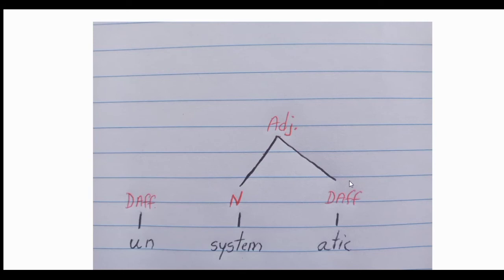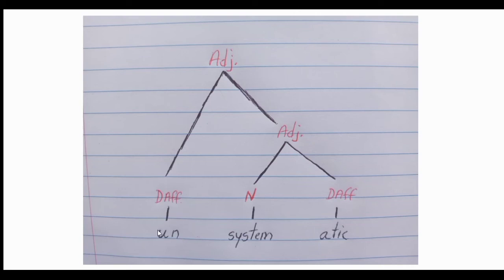After you get 'systematic', you then link the adjective 'systematic' with the prefix 'un-' in order to form another adjective — 'unsystematic'. So you see that sometimes the connections in the morphological tree depend on how the word is structured. You cannot link morphemes just because you want to draw the tree — it depends on the actual structure. 'Unsystem' does not exist in English, so it requires that you analyze the words carefully.